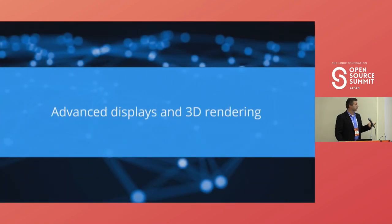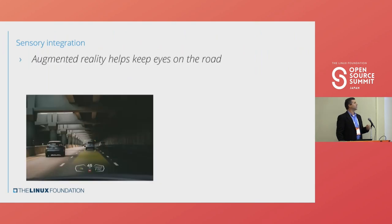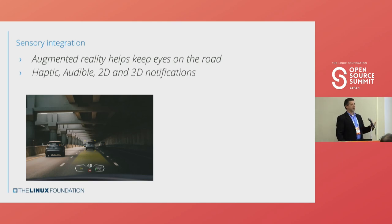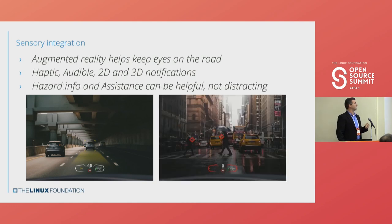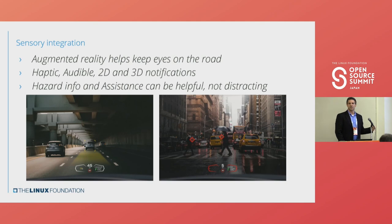For advanced displays and 3D rendering: sensory integration and augmented reality can take a video payload with a coordinate system and display what's going on in real time. Haptic feedback you feel on the wheel, audible notifications — all tied into a 3D coordinate space to identify when things are happening. Hazard assistance can be helpful rather than distracting. Showing depth matters: if I put a triangle on the screen, is it the person in front or someone in the back? In a very limited amount of time, you have to keep it simple because they need to keep their eyes on the road.